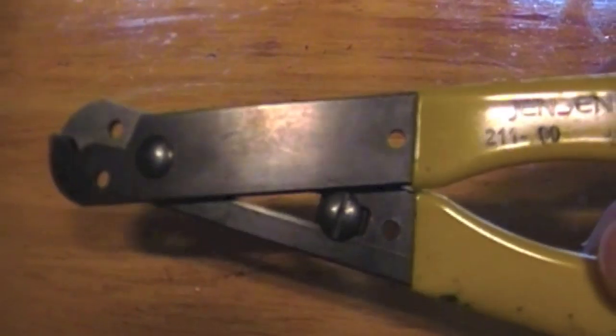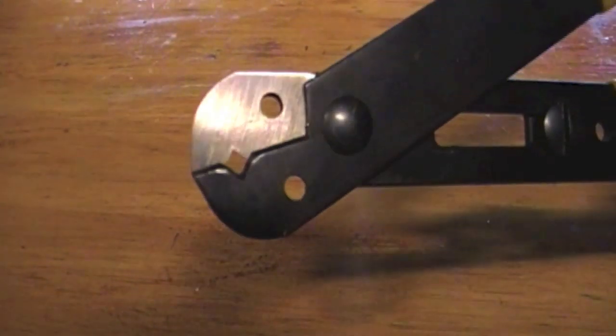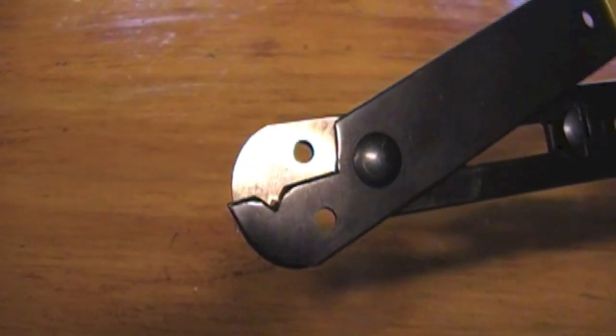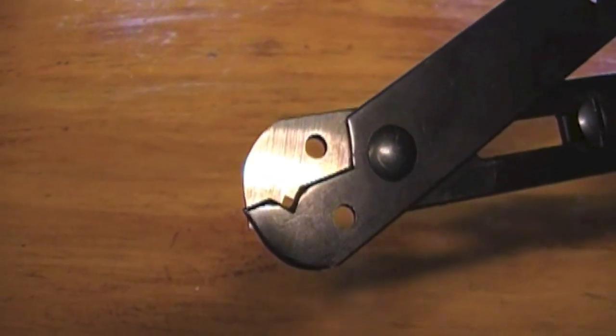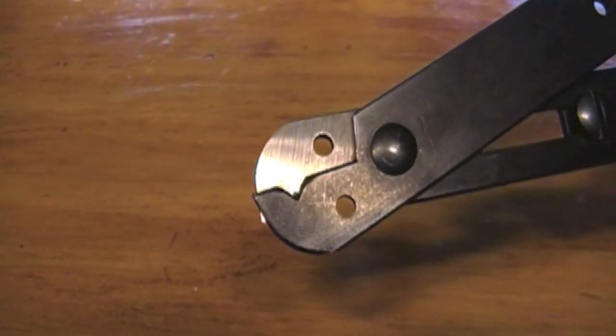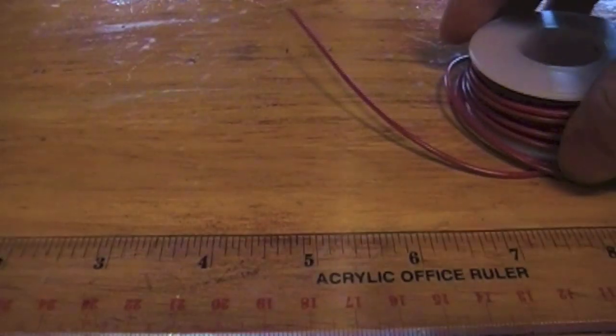For the tools, you're going to want some wire cutters. It doesn't really matter what you have as long as you can cut the wire and strip the plastic off the copper solid wire. Just get something, it doesn't really matter. I've even used scissors, just don't mess up the copper wire too much. And you're going to need a ruler for measuring the copper wire.